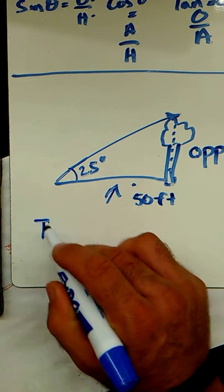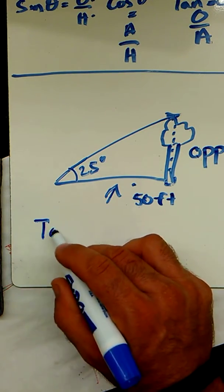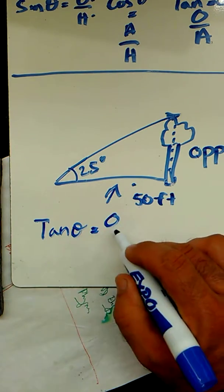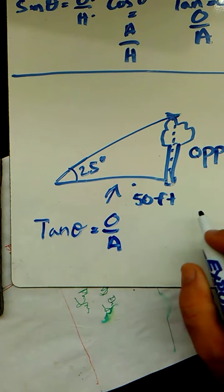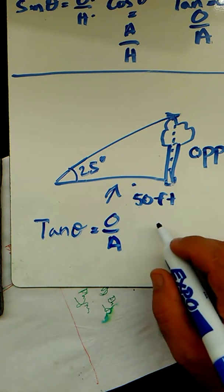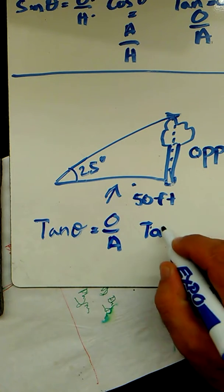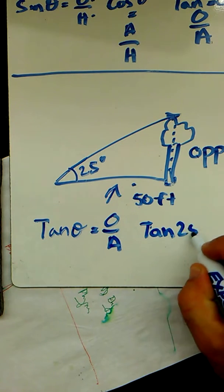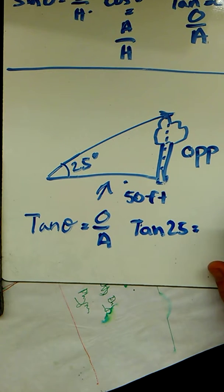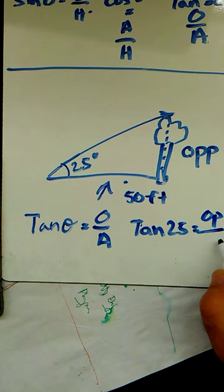So the tangent of an angle, which is this one, equals the opposite divided by the adjacent. Now it's just a matter of plugging in some numbers. Tangent 25 equals opposite over adjacent. The adjacent's 50.